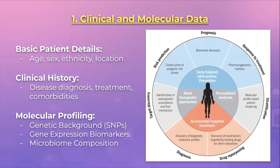To briefly review what we have learned in session 1: first, we took a look at various data sources that are used to understand clinical decisions. These consist of basic patient details, their clinical history, and finally the molecular profiling data. We discussed what is clinical data, what is molecular data, and where they come from. What was interesting to learn was the growing importance of molecular data and how their association with clinical data can help refine strategies for diagnostics and therapy selection.